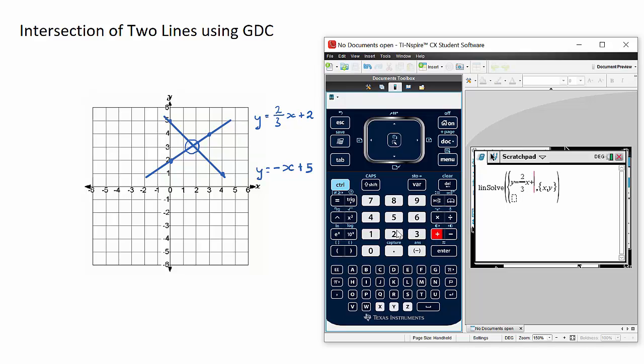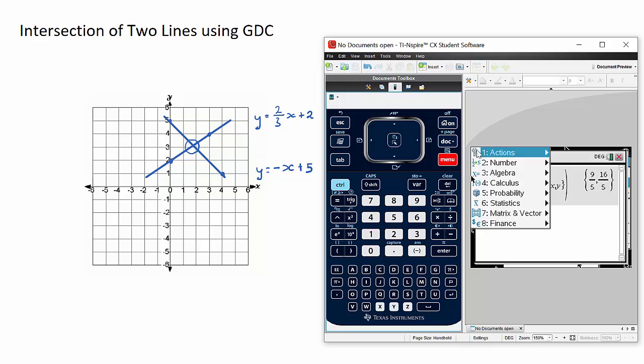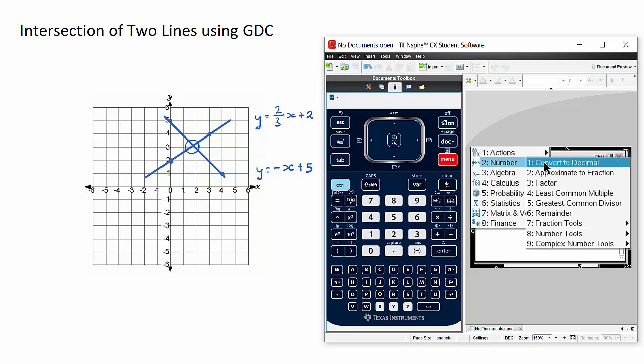Then skip down to the bottom equation. Enter it exactly how you see it: y equals negative x plus five. Now just hit enter. This here is the coordinate of this point. We currently see it in fraction form. We can convert it to decimal by going menu, convert to decimal.